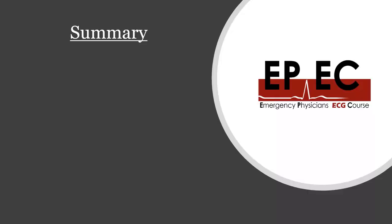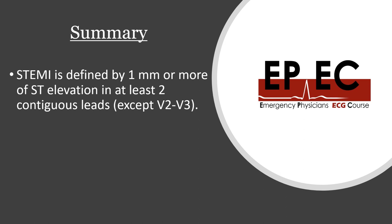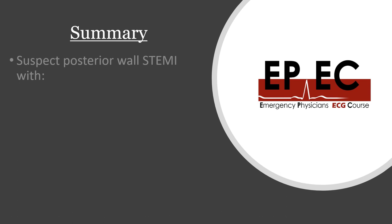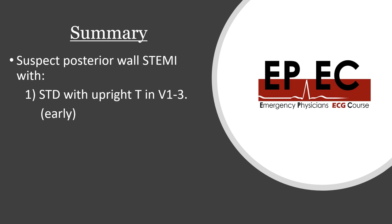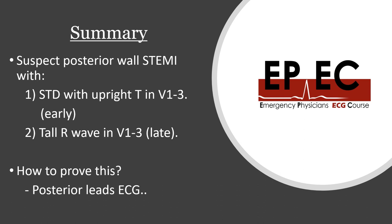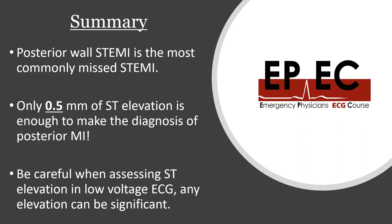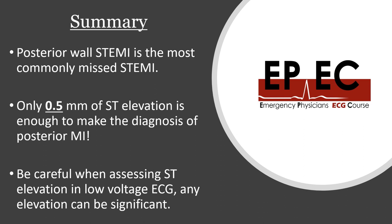To summarize: STEMI is defined by one millimeter or more of ST elevation in at least two contiguous leads except V2 and V3 — this is the worldwide definition, though the UK currently uses a two-millimeter threshold for chest leads. ST elevation is measured at the J point compared to the TP segment baseline. Suspect posterior wall STEMI when you see ST depression with upright T wave or tall R waves in V1 to V3, and confirm with posterior leads. Posterior STEMI is the most commonly missed STEMI; only 0.5 millimeters is required in posterior leads, and be careful assessing elevation in low-voltage ECGs as any elevation can be significant.